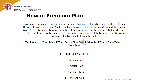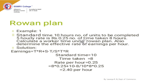Using this formula, you can calculate wages under the Rowan Plan. From the given information, you are required to calculate wages. Standard time allowed is 10 hours, number of units to be completed is 5, rate per hour is ₹0.25, and time taken by the worker to complete the job is 8 hours. The standard time is fixed in advance, and workers are encouraged to perform the work within the standard time. If workers save the time, they are entitled to get a bonus.